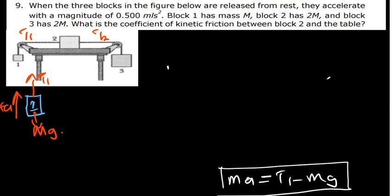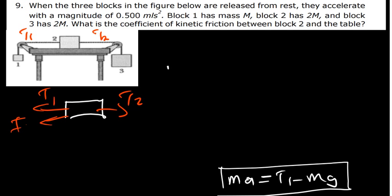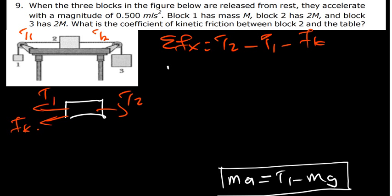Now let's go to block 2. We can see that there is friction there. Block 2 has a tension T2 pointing toward the positive x-axis and another tension T1 pointing toward the negative x-axis. Since this object is moving in that direction, there is also a friction force opposing the motion, so friction and T1 are acting in the same direction opposing the motion.